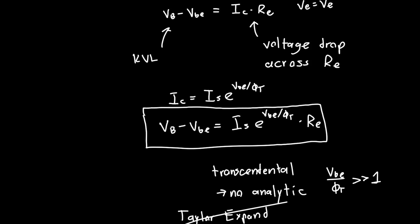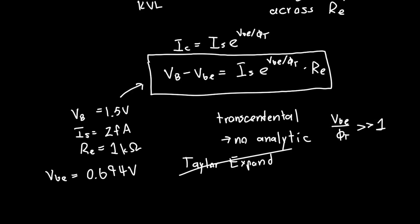If you actually solve this transcendental equation in your calculator or in some other numerical software, for VB is 1.5 volts, IS is 2 femtoamps, and RE is 1 kilo ohm, you will get that VBE is equal to 0.694 volts and IC is equal to 0.807 milliamps.